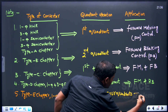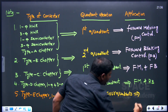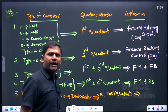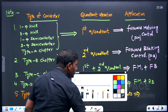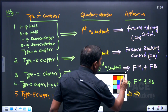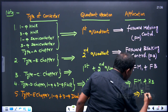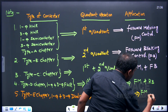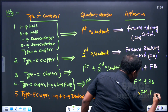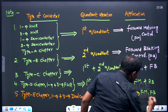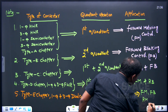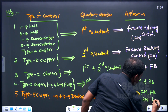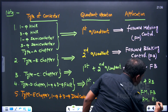Since Type E chopper and dual converters operate in all four quadrants, they are used for forward motoring, forward braking, reverse motoring, and reverse braking.